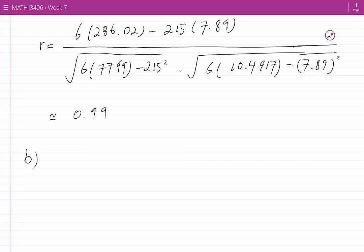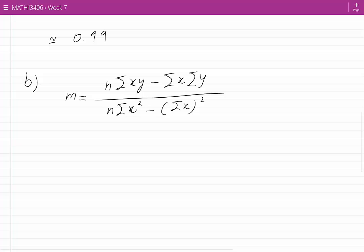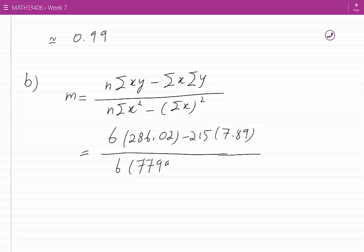The equation for m, which is the slope of that line, is n sum xy minus sum x sum y divided by n sum x squared minus sum of the x values squared. Once I plug in what I have found from before I would have 6 times 286.02 minus 215 times 7.89 in the numerator, and in the denominator I would have 6 times 7,799 minus 215 squared. Once we use our calculator this approximately becomes 0.035.